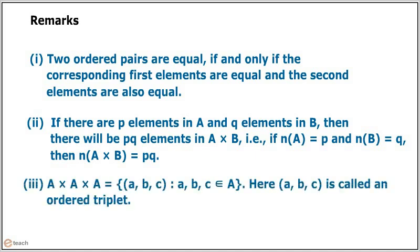The Cartesian product A into A into A into A equals the set of all ordered triplets a comma b comma c such that a, b, c belongs to the set A. Here, a comma b comma c is called an ordered triplet.